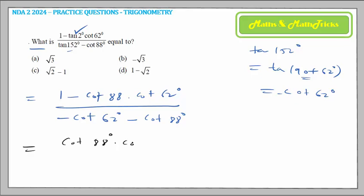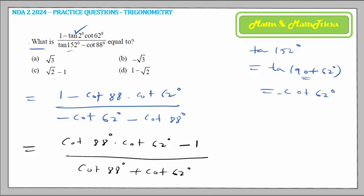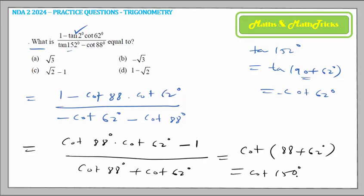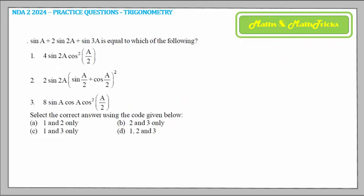This gives (cot 88° × cot 62° - 1) divided by (cot 88° + cot 62°), which is the cot(a+b) formula with a = 88° and b = 62°, giving cot 150°. We can split 150° as 90° + 60°, so cot(90° + 60°) in the second quadrant becomes minus tan 60°, and tan 60° = √3. So the overall answer is minus √3, and hence option B.